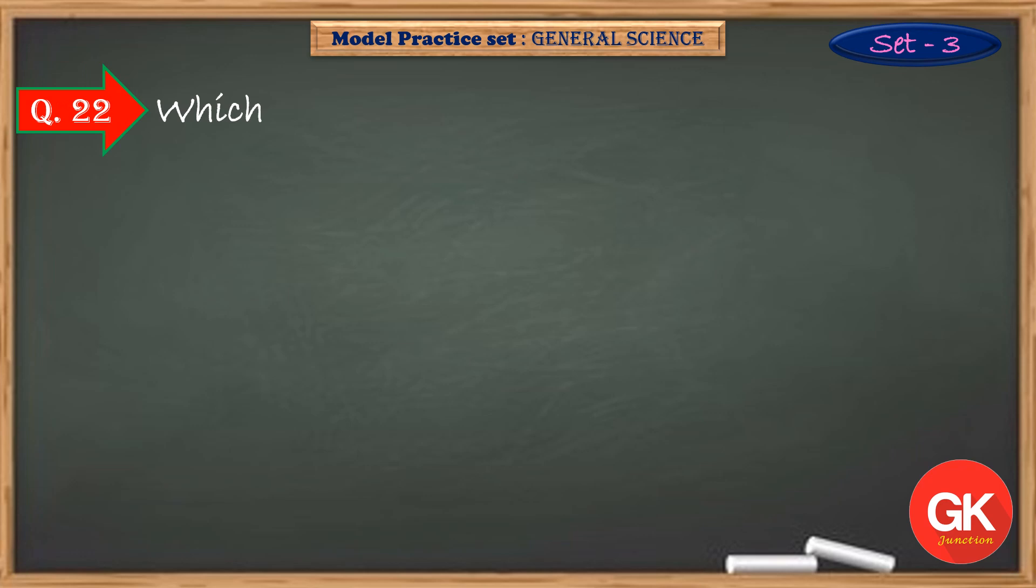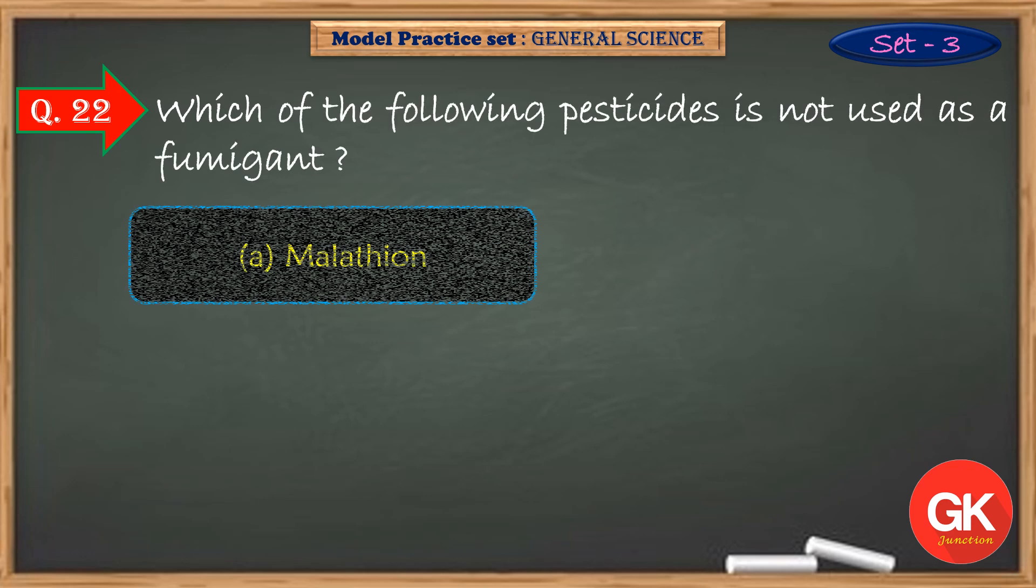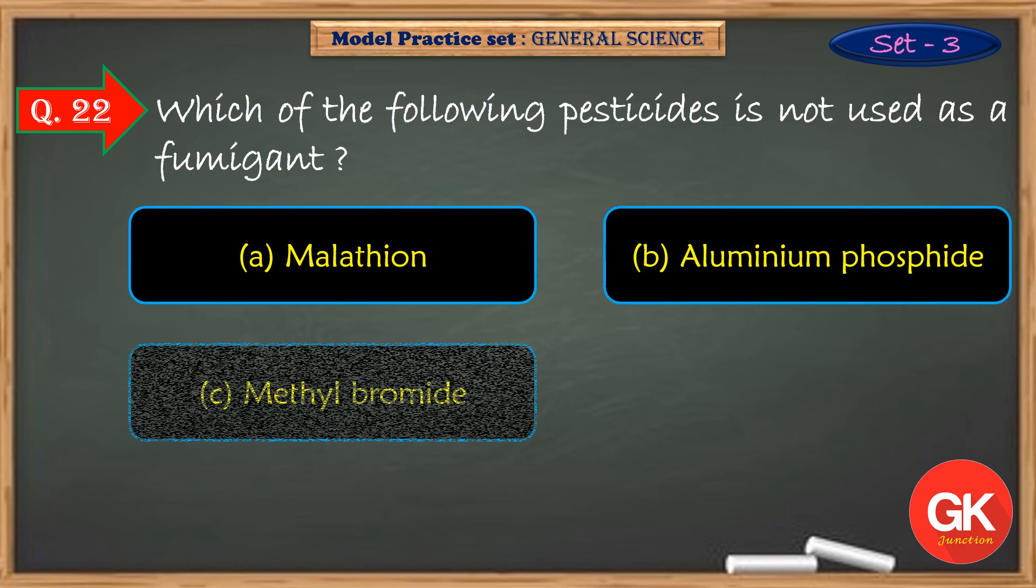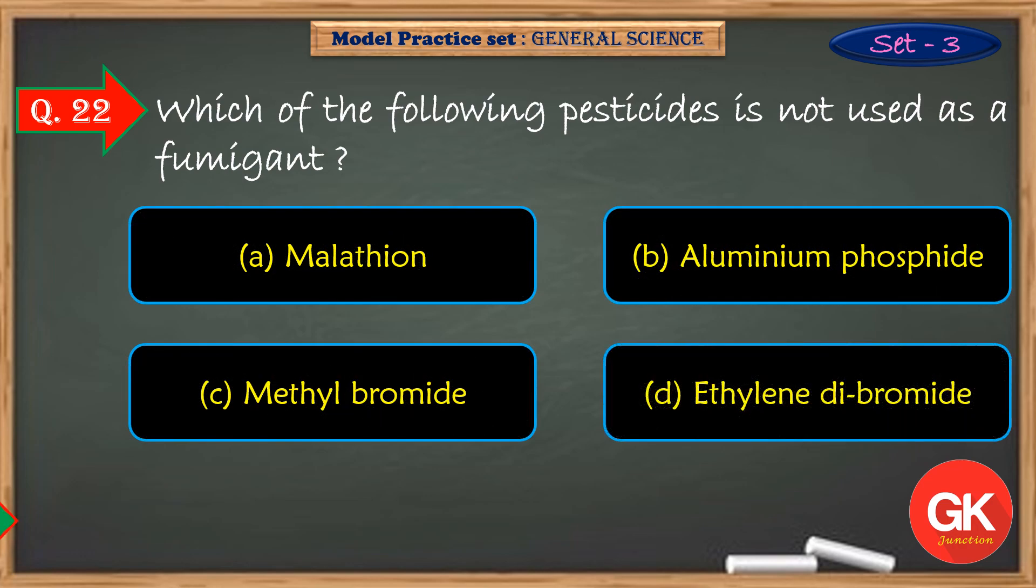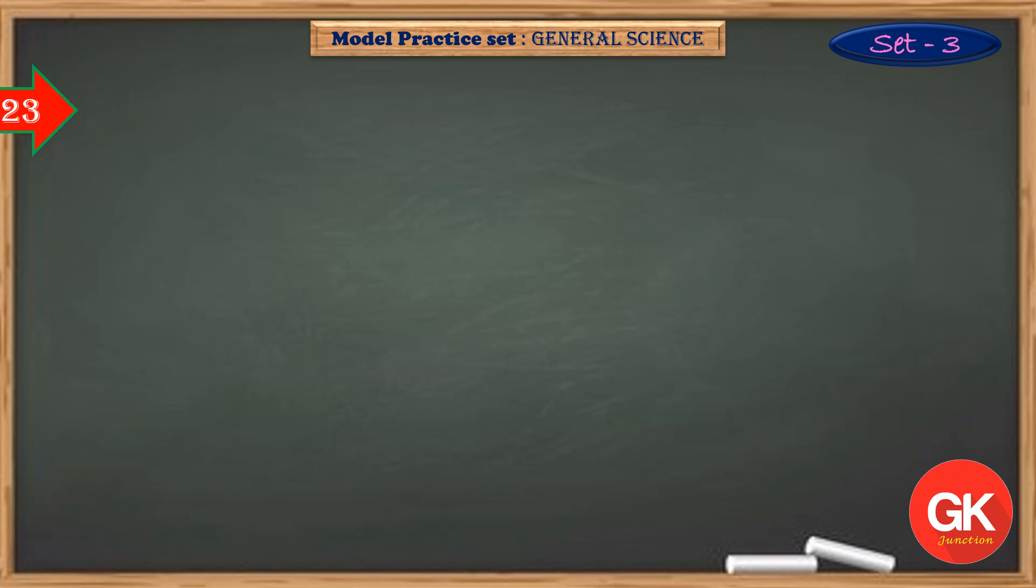Which of the following pesticides is not used as a fumigant? Graphite and seluminite are.